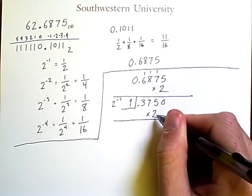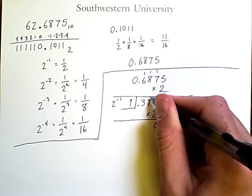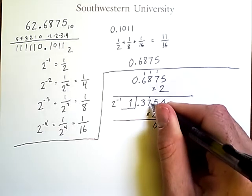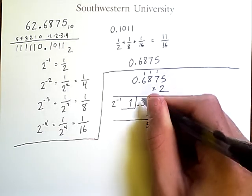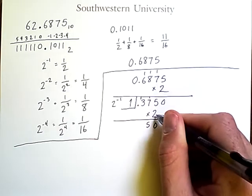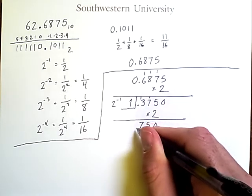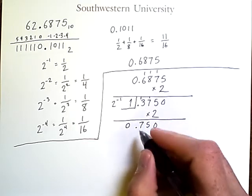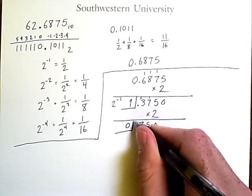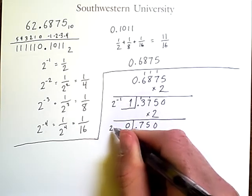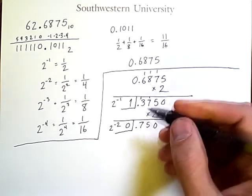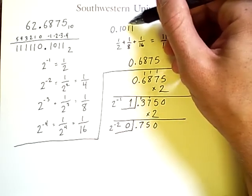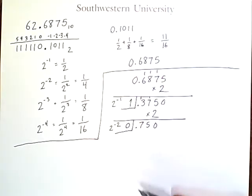So in this new multiplication, 2 times 5 is 10. 2 times 7 is 14, plus 1 is 15. And then 2 times 3 is 6, plus 1 is 7. So now this is a 0 to the left of the decimal point. Save that. This corresponds to the position 2 to the negative 2, which is consistent so far with what we know the answer should ultimately be.